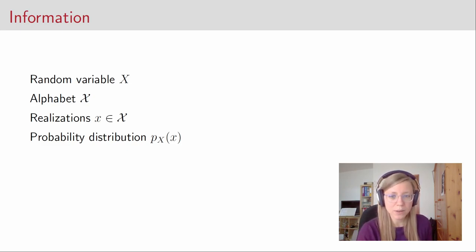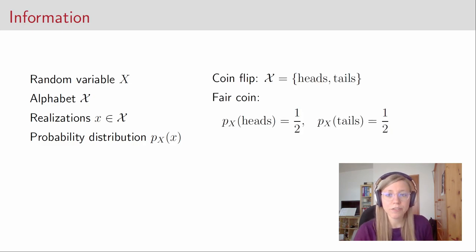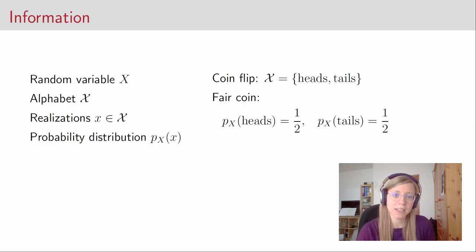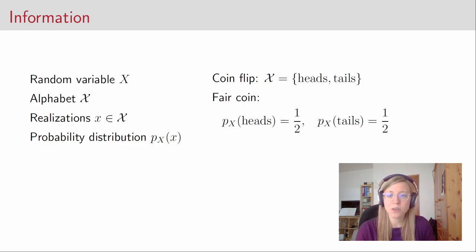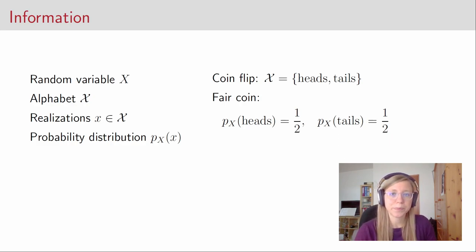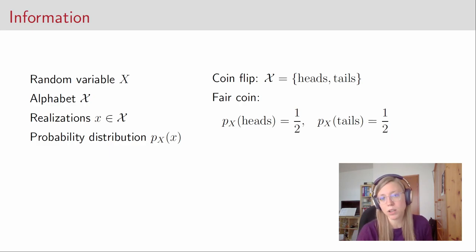For example, a random variable could describe a coin flip that we make. For a coin flip the alphabet consists of heads and tails, and if it is a fair coin then the probability that heads appears is one half and also the probability that tails appears is one half. So as you see, random variables model random experiments — every sort of experiment that has some randomness to it is modeled by a random variable, for example a coin flip.